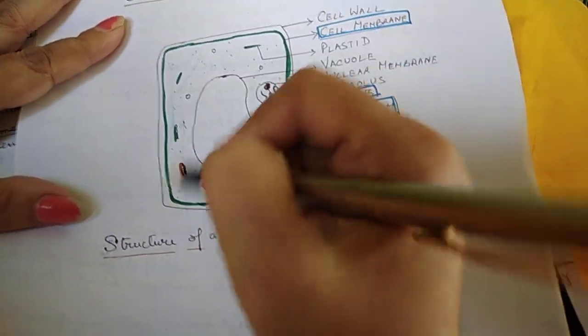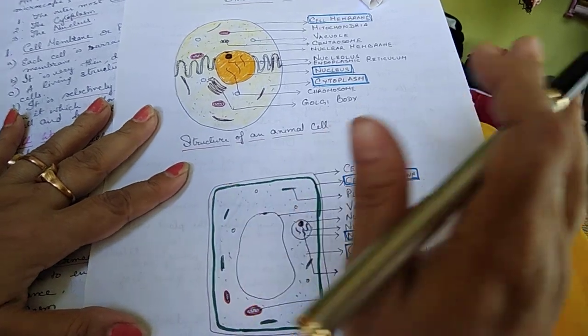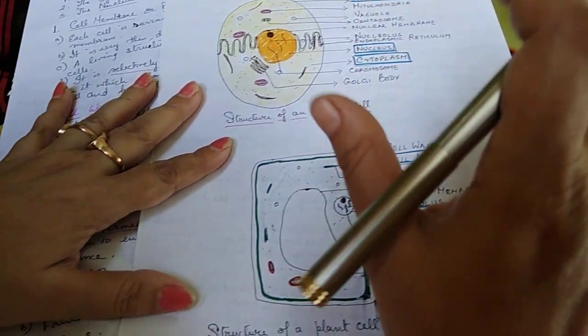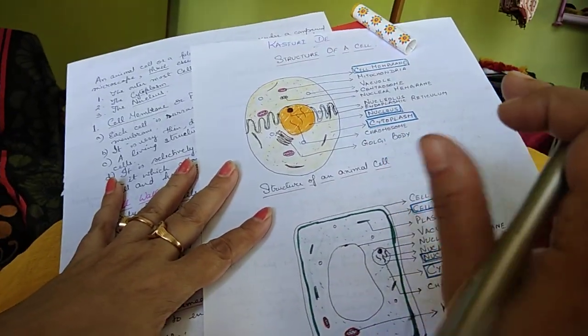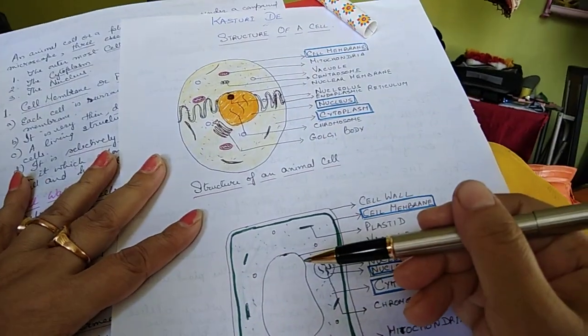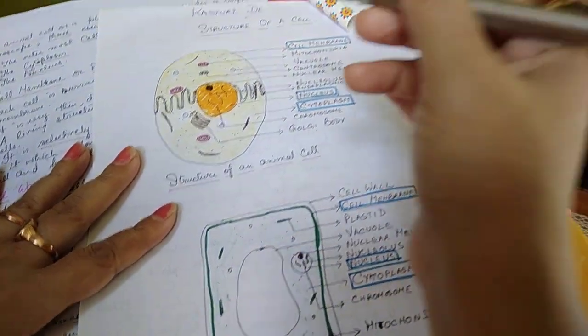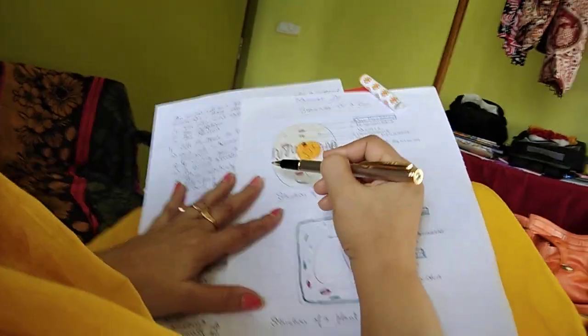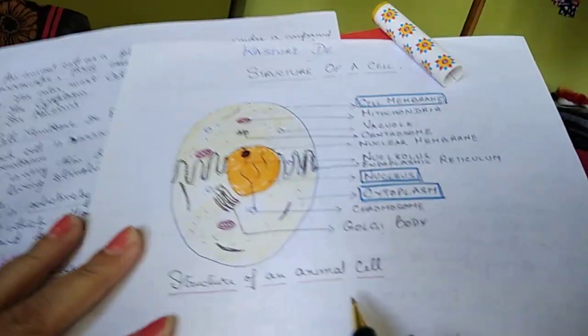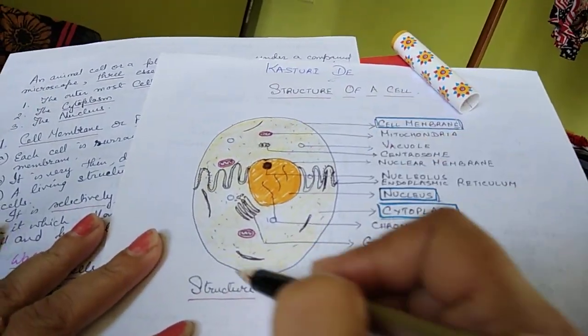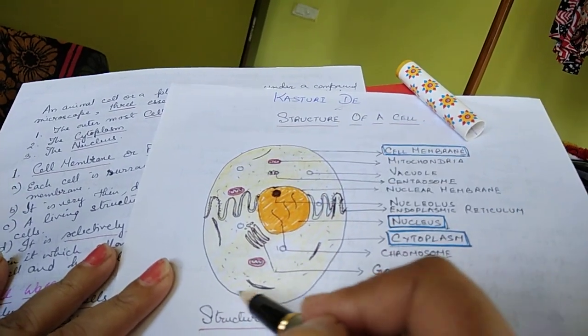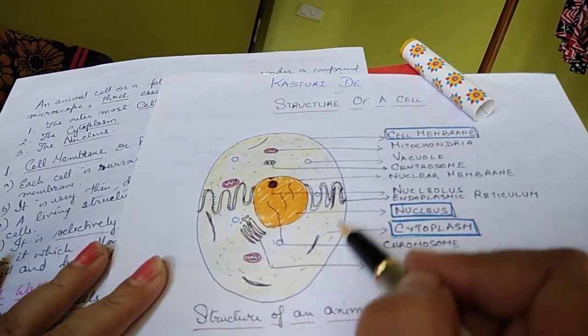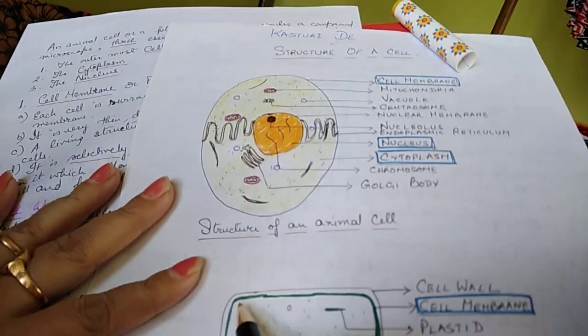The basic structure is the same, only there are certain differences between an animal cell and a plant cell. The basic structure, that is the cell membrane in both cases, this outside border, the outermost part of the cell is the cell membrane. This is also there's a cell membrane outside the plant cell also, this green color is the plant cell membrane.